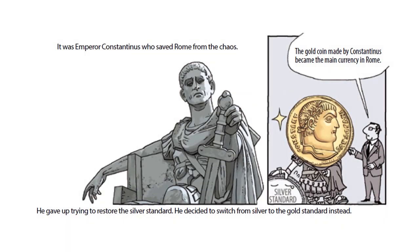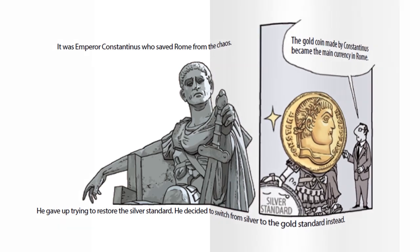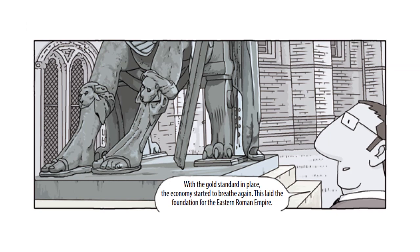It was Emperor Constantinus who saved Rome from the chaos. He gave up trying to restore the silver standard and decided to switch to the gold standard instead. The gold coin made by Constantinus became the main currency in Rome. With the gold standard in place, the economy started to breathe again, and this laid the foundation for the Eastern Roman Empire.